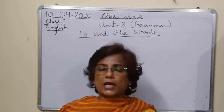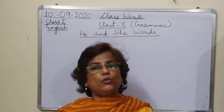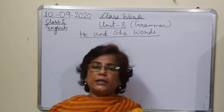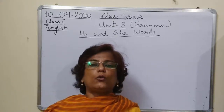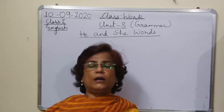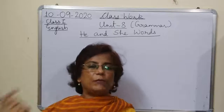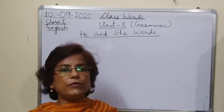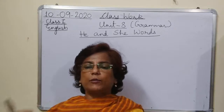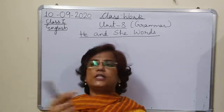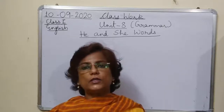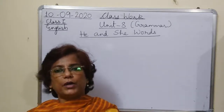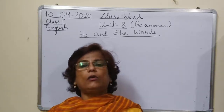He words — as we have already discussed, he words are the naming words. So all the naming words — not all — naming words jo hote hain, unmen jo kisi person ke naam hain ya animals and birds ke jo naam hote hain. All the things around us are naming words. Whether there are plants, animals, birds, human beings — all are naming words. But human beings, birds and animals — they are either male or female.